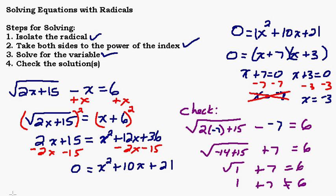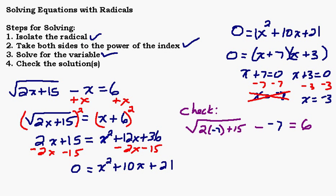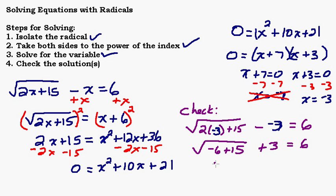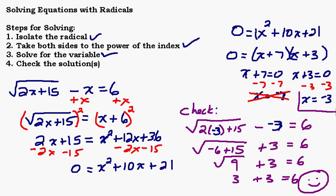Now let's check negative 3. Plugging in: square root of 2 times negative 3 plus 15, minus negative 3 equals 6. We get square root of negative 6 plus 15, plus 3 equals 6. That's square root of 9 plus 3 equals 6. The square root of 9 is 3, so 3 plus 3 equals 6. Yes it does! Negative 3 is our solution.